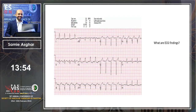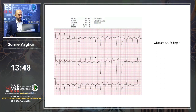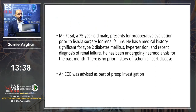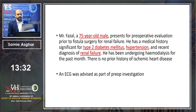There is a left bundle branch block. There are Q waves in lead 3 and lead AVF — though it may be axis deviation causing the downward Qs. So what to do now? We see there is no prior history of ischemic heart disease, but there are risk factors: the patient is 75 years old, has diabetes, is hypertensive, and has recent onset renal failure. How do we approach these incidental ECG findings?